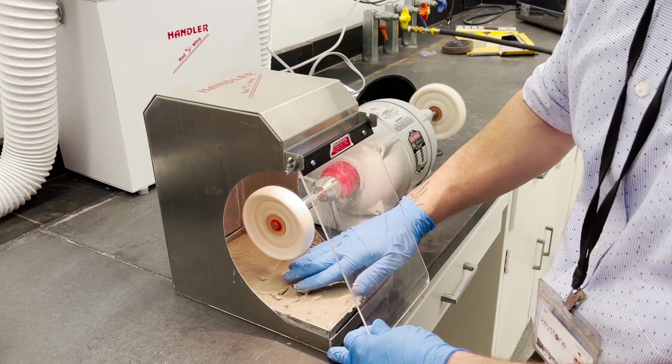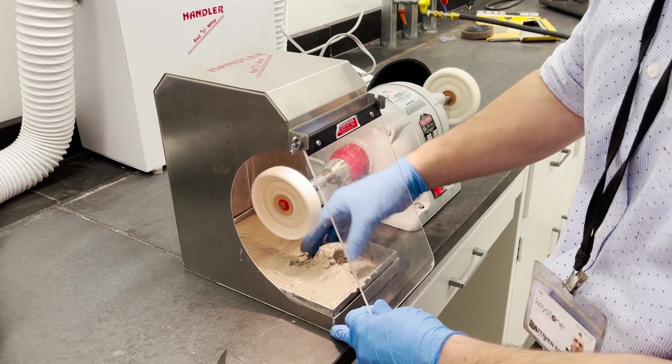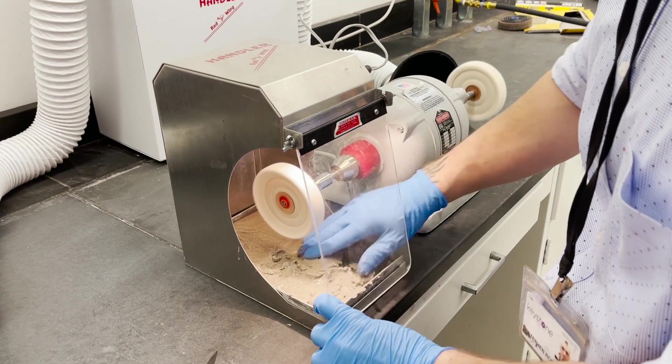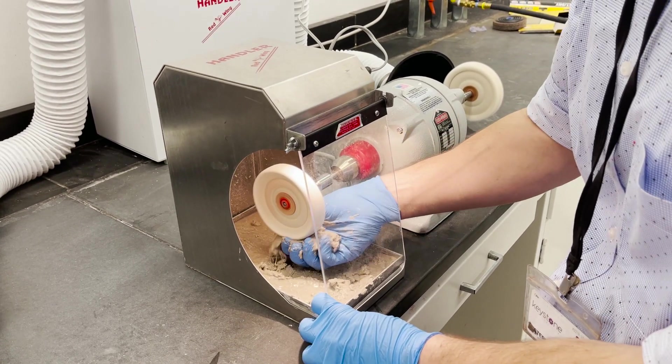Step one: after you wet your pumice, it should have about the consistency of wet cement. To apply it on the wheel, you just grab a bit until it starts to attach.